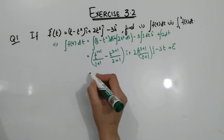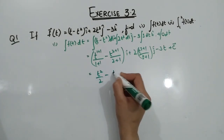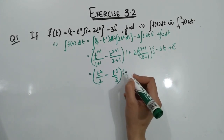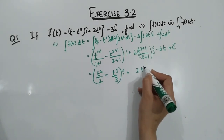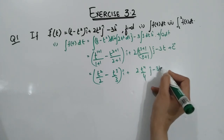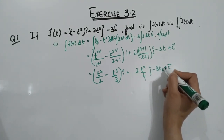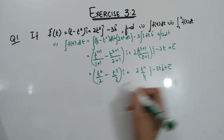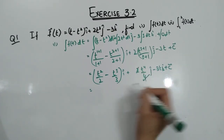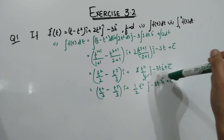Now simplifying: we write t squared over 2 minus t cubed over 3 for the i component, plus 2 times t to the 4th over 4 for the j component, minus 3t plus c for the k component. After further simplification, you get the final answer.